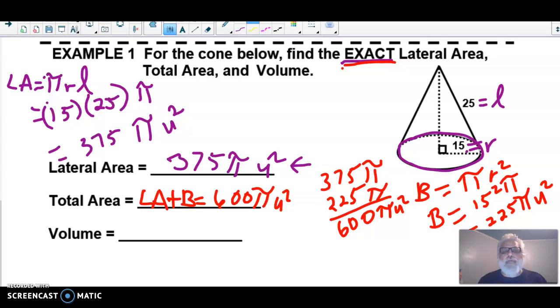Okay, now the third part of example one will be finding the volume. To find the volume, we have to know the area of the base, and then we have to multiply that times the height and then divide it by three. So the area of the base we found right here, which is that 225π.